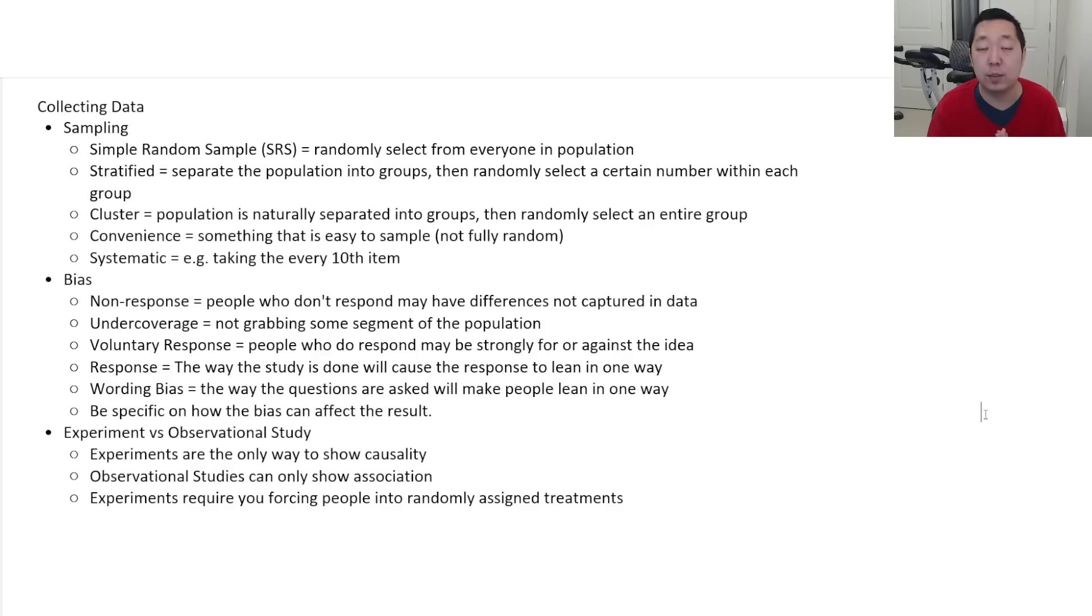Now, when you're collecting data and you're sampling or doing surveys, there are various kinds of bias that can be involved. There's non-response bias, that's where people who don't answer might have a different makeup or different behavior than the people who do answer. There's under coverage, where you're sampling a group of people but you're not necessarily grabbing from the whole population. A voluntary response is people who do respond tend to have a very strong opinion. Like people who leave Yelp reviews, usually people who love it or usually people who hate it. It's not usually the mediocre people who just say it was fine.